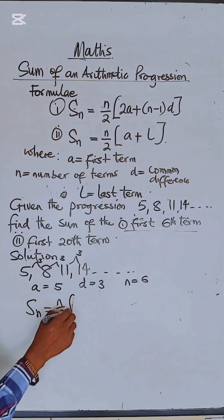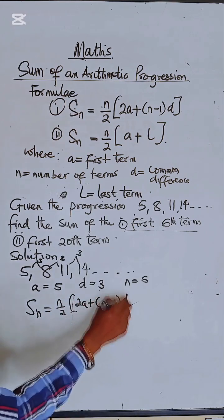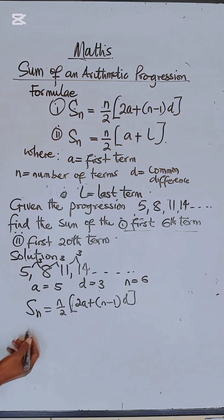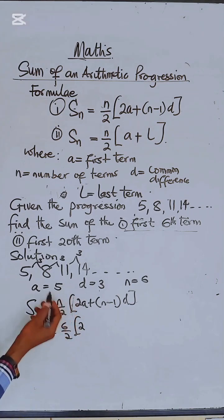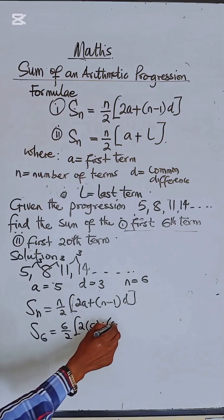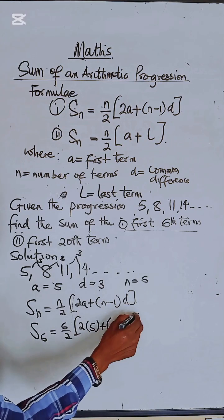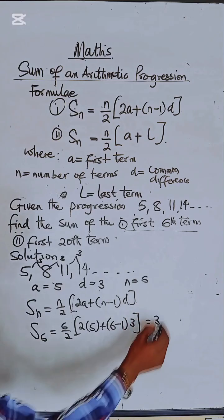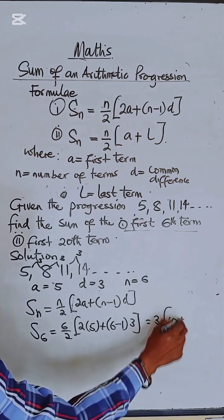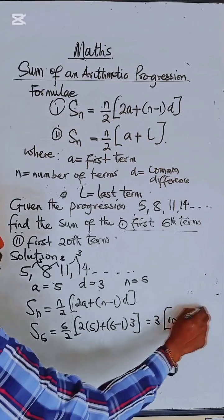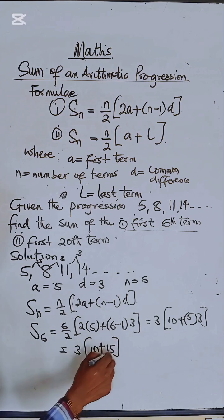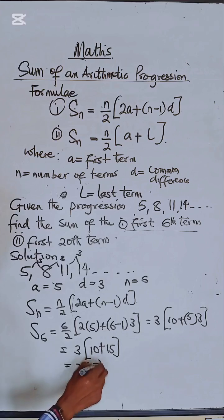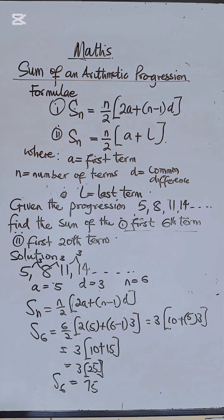We apply the formula S_n = n/2 * (2a + (n-1)d). So S6 = 6/2 * (2×5 + (6-1)×3). This gives us 3 * (10 + 5×3), which is 3 * (10 + 15), giving us 3 × 25, which equals 75. So the sum of the first 6 terms is 75.